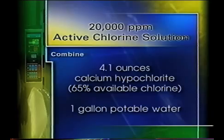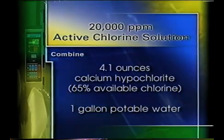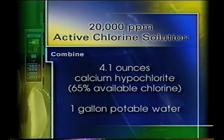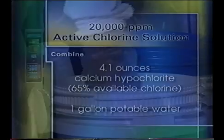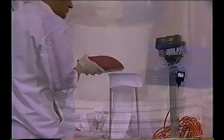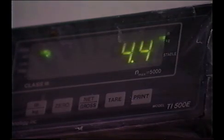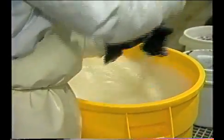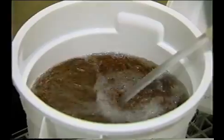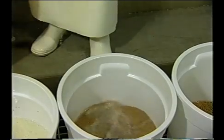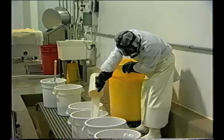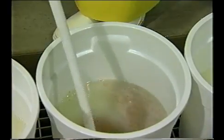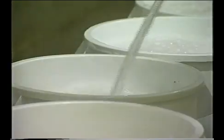Prepare a 20,000 ppm active chlorine solution by mixing 4.1 ounces of calcium hypochlorite powder, which contains 65% available chlorine, with one gallon of potable water at room temperature in a well-ventilated area. It's important to weigh the calcium hypochlorite on a scale rather than using a measuring cup. Only by using scales can the proper concentration of 20,000 ppm of active chlorine be assured. The solution should be stirred for at least five minutes to maximize free chlorine. Pre-wash seeds in potable water for at least five minutes with agitation and then drain the wash water. Treat pre-washed seeds by soaking five pounds of seed in one gallon of 20,000 ppm calcium hypochlorite solution with continuous agitation for 15 minutes at room temperature. After treatment, drain the solution and rinse the seeds thoroughly with potable water for 10 minutes, changing the water several times as necessary.